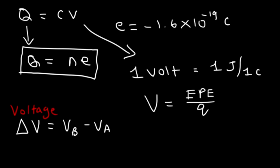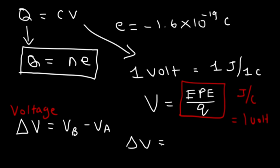VB is the electric potential at position B, and VA is the electric potential at position A. So electric potential is the electric potential energy per charge. Electric potential and voltage are both measured in volts, which is joules per coulomb. Voltage is basically the ratio between the work and the charge — the amount of work that can be done per unit charge. So work is equal to Q times delta V.